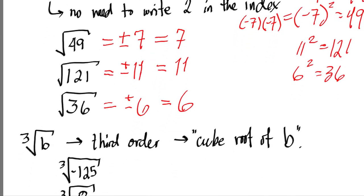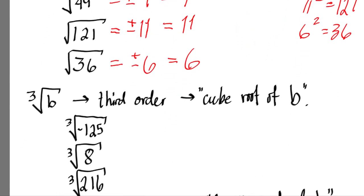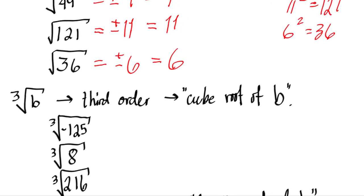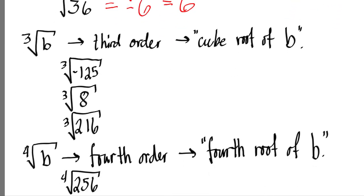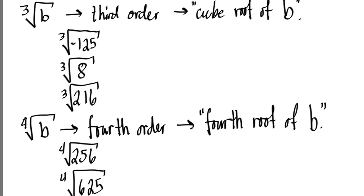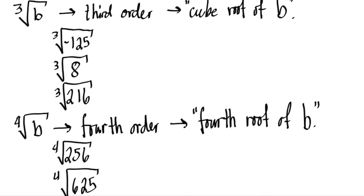Let's move on to the third order, or cube roots. We read this as the cube root of b, and the index is emphasized as a 3. What number, multiplied by itself three times, will give us 125, 8, or 216?